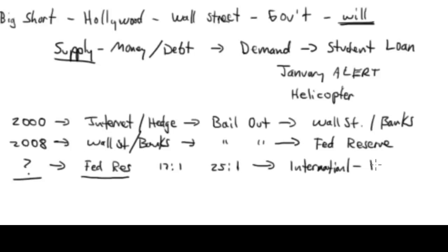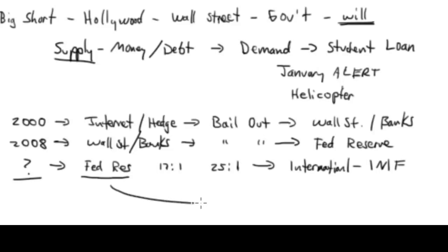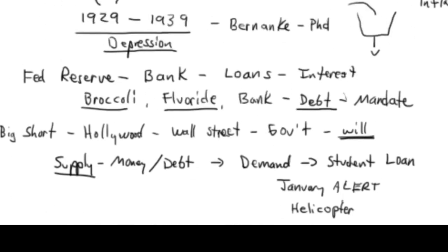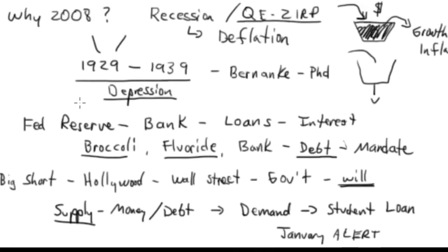I'll say the IMF — the International Monetary Fund — because they're going to be the major player. Why am I so adamant about this connection? Because of the patterns. Just like I talked about the pattern with 1929 and 2008 — the 1929 correction, I showed you this in the video.